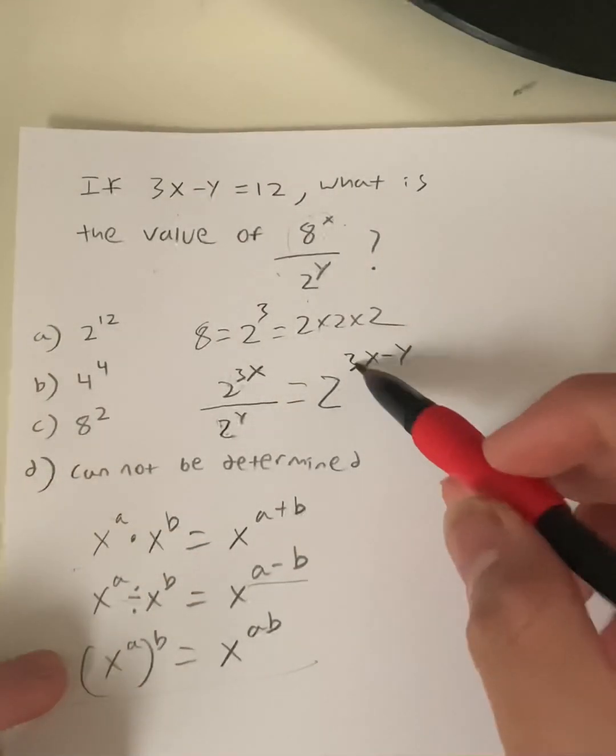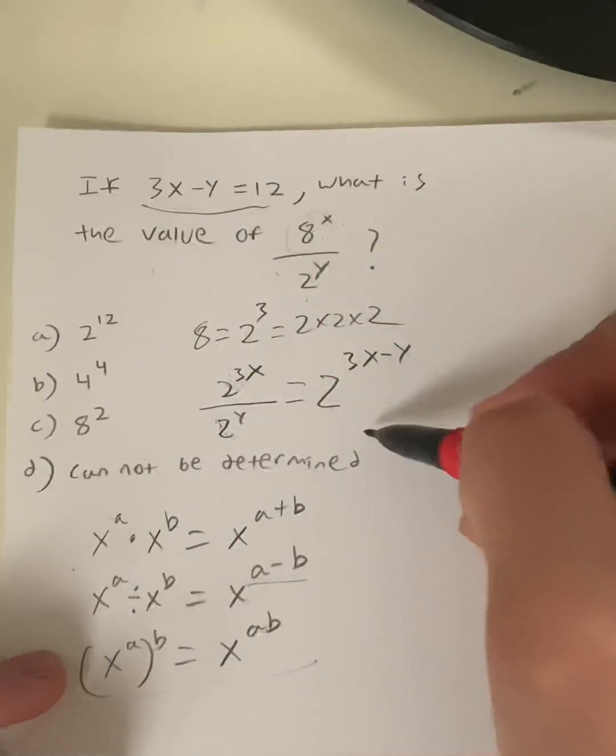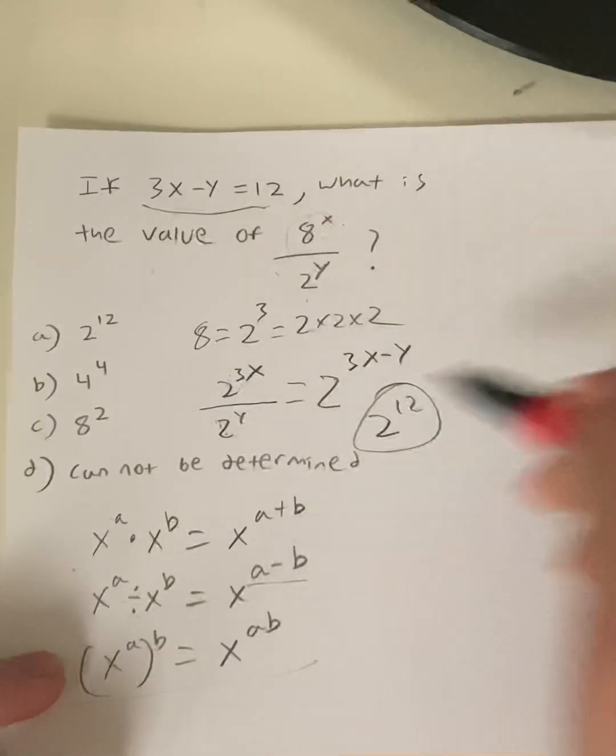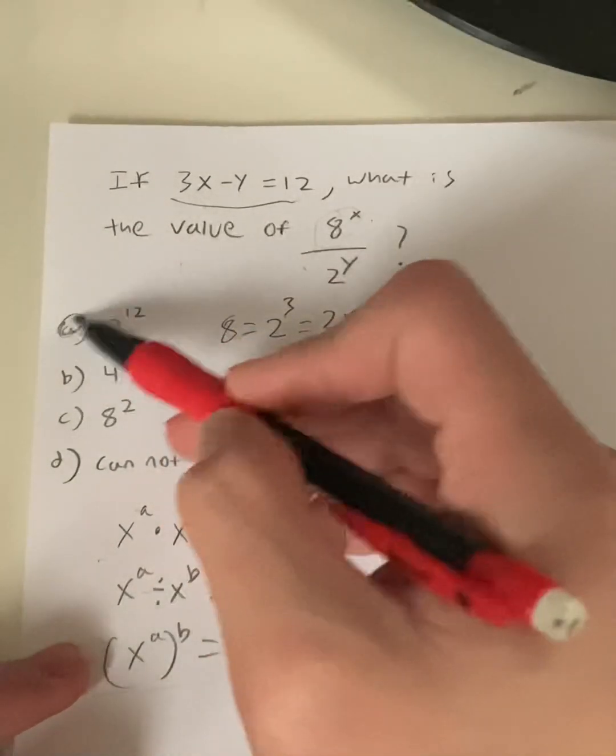What's the value of 3x - y? Well, it's given by the question. It's going to be 2^12, meaning your answer has to be (a).